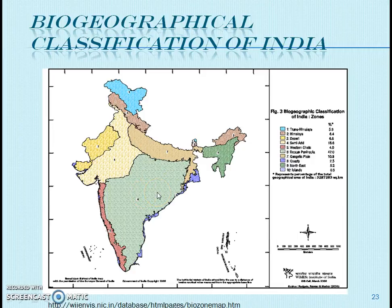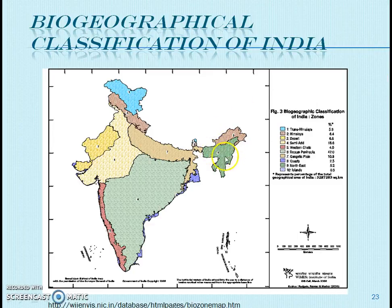The Gangetic Plain region covers the upper and lower Gangetic Plain, including areas from the eastern side — Uttar Pradesh, Bihar, and West Bengal. The Northeast India region includes the northeastern states and shows the richest biodiversity due to the presence of the Brahmaputra Valley.